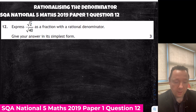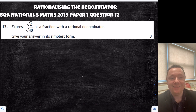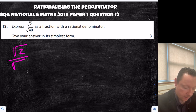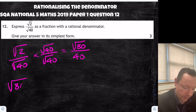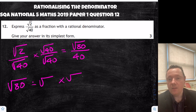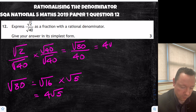National 5 Maths 2019, Paper 1, Question 12. Express root 2 over root 40 as a fraction with a rational denominator in simplest form. Rationalise by multiplying by root 40 over root 40: numerator becomes root 80, denominator becomes 40. Simplifying root 80: the biggest square factor is 16, so root 80 equals 4 root 5. The fraction is 4 root 5 over 40, which simplifies to root 5 over 10.